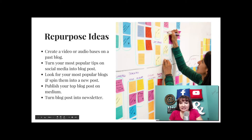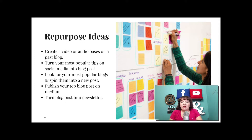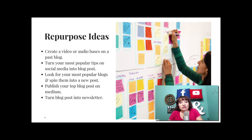Here's a good way to look at repurposing ideas. You can create a video or audio based on past blog posts you created a year ago, six months ago, or three months ago. Turn your most popular tips into social media posts or into a blog post. Look for the most popular blog posts and spin them into a new blog post — it's like recycling your content.